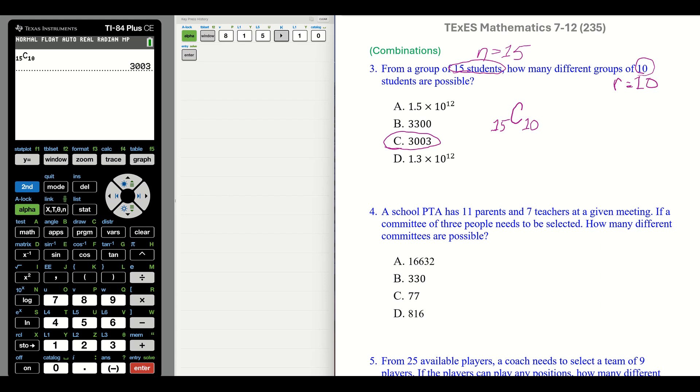Number four: a school PTA has 11 parents and seven teachers at a given meeting. If a committee of three people needs to be selected, how many different committees are possible? Again, we are talking about a combination. We don't care about the order.